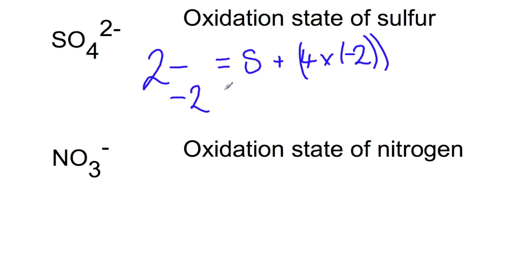So we have minus two equals sulphur plus minus eight. So if we take the minus eight over to this side, we find that the oxidation state of sulphur is plus six. So this is just really a little bit of algebra.